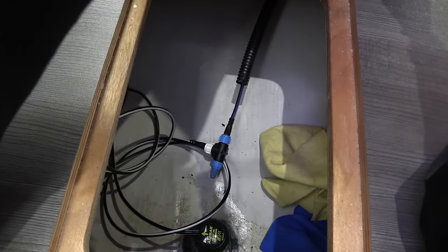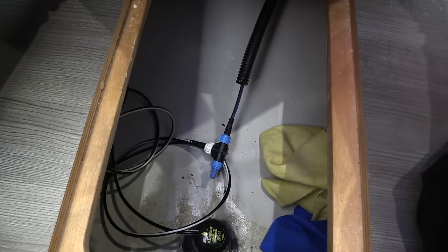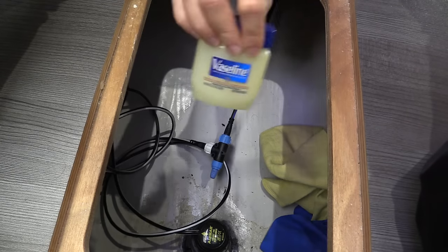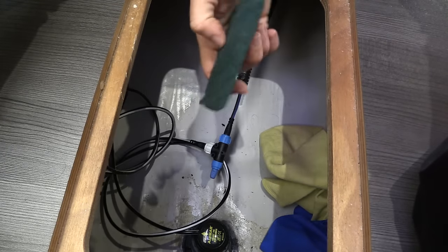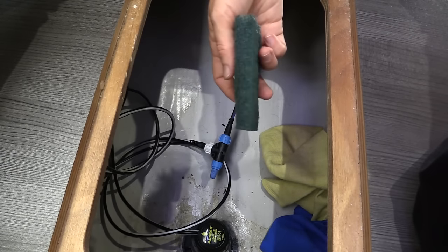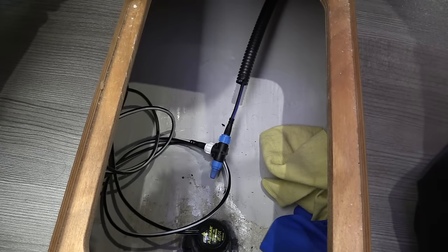I also have the instructions here. Vaseline to lubricate our O-rings, and a green sponge, small green sponge, hopefully to clean the transducer. We will see how that goes.